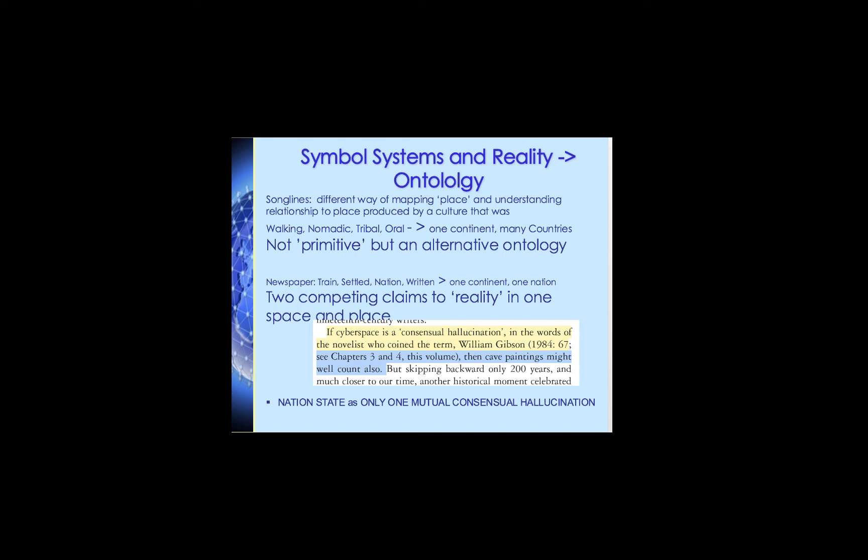We talked last week about Benedict Anderson's notion that the newspaper and the steam train were really important for uniting what were at first the colonies of Australia into a federated nation extending across a whole continent — through the distribution of many copies of one national word: the daily news, where we're all reading the same thing, on the same page every day, under the same powers, governed by the same people, following the same daily events. He said those things united us as one continent, one nation. We get two competing claims to reality here in one space and place.